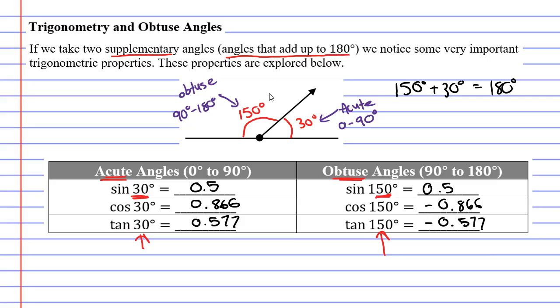So what happened in this scenario? Well, when we use the sine function, we got the same result in both instances. When we use the cos function and also the tan function, we got the same number except it had a negative out the front of it. So is that going to happen in all situations? Well, let's have a little explore.